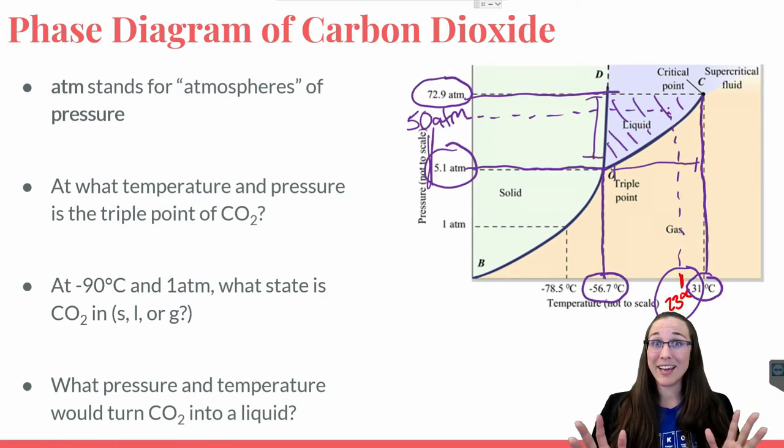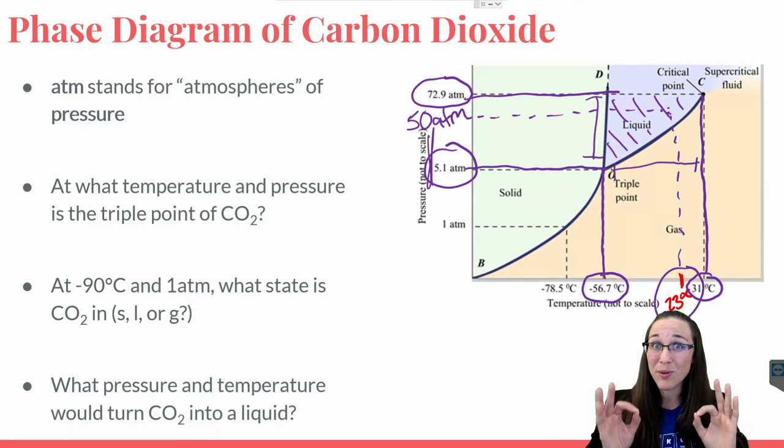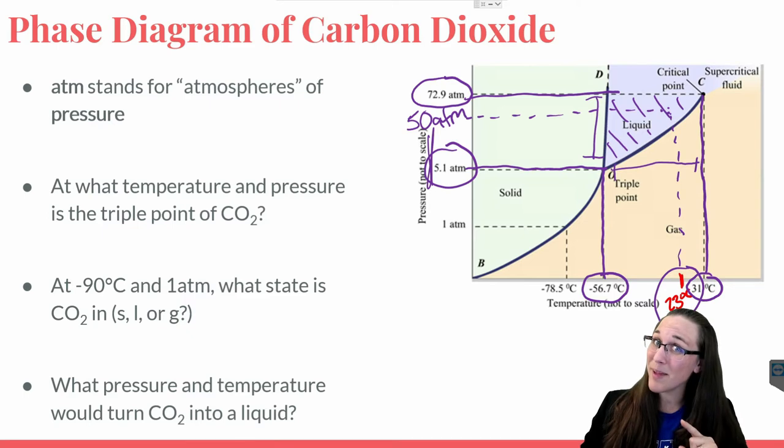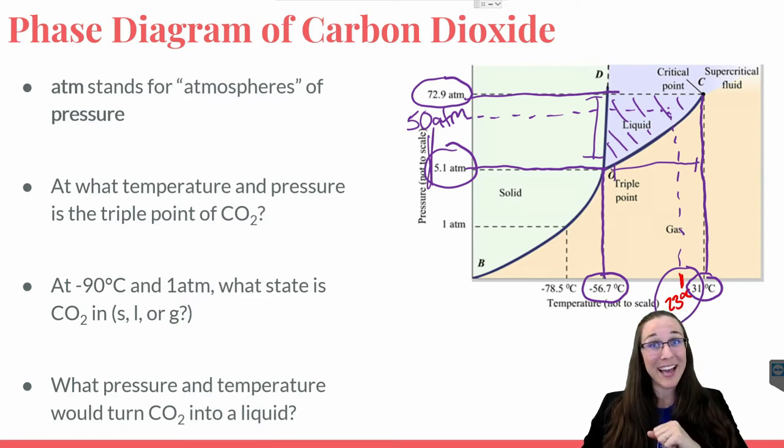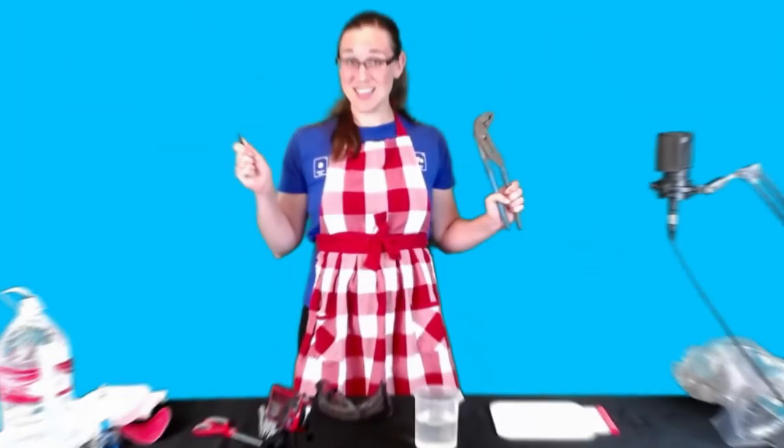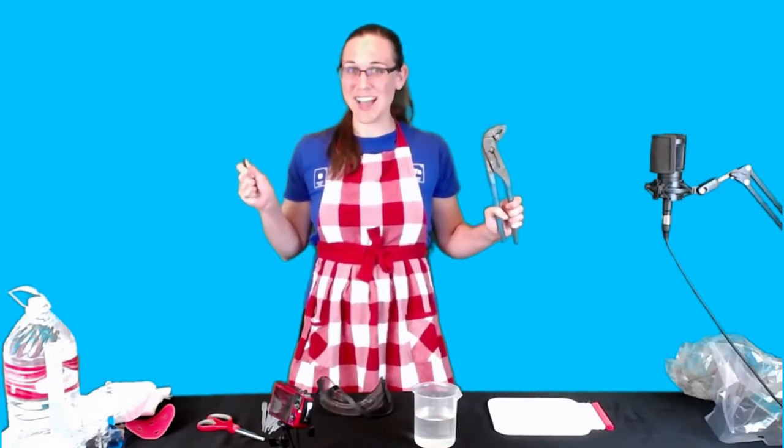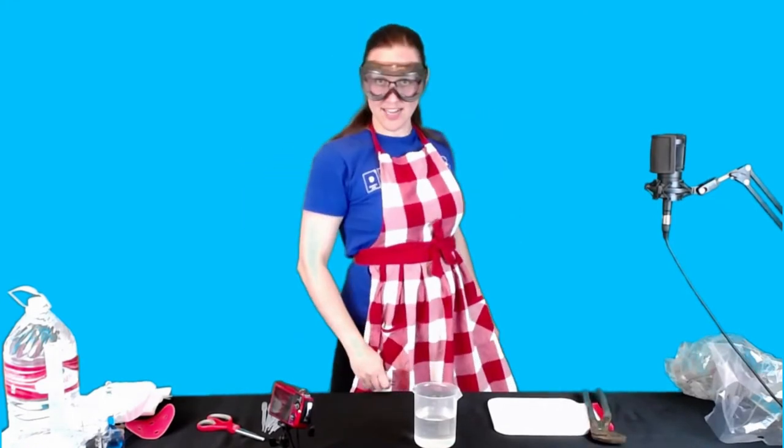Now that we have an idea of how much pressure would be required to turn CO2 from a solid into a liquid instead of sublimating directly from a solid to a gas, let's check it out in the lab. Let's gear up for lab to see the solid CO2 dry ice turn into a liquid. Let's do this.